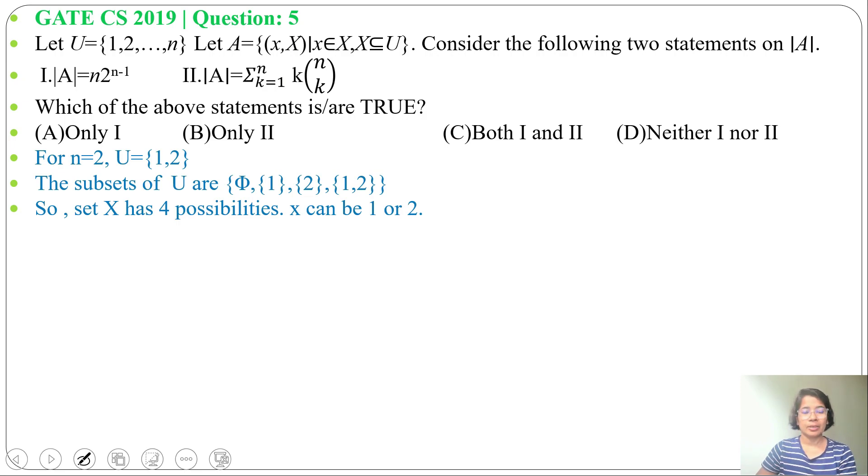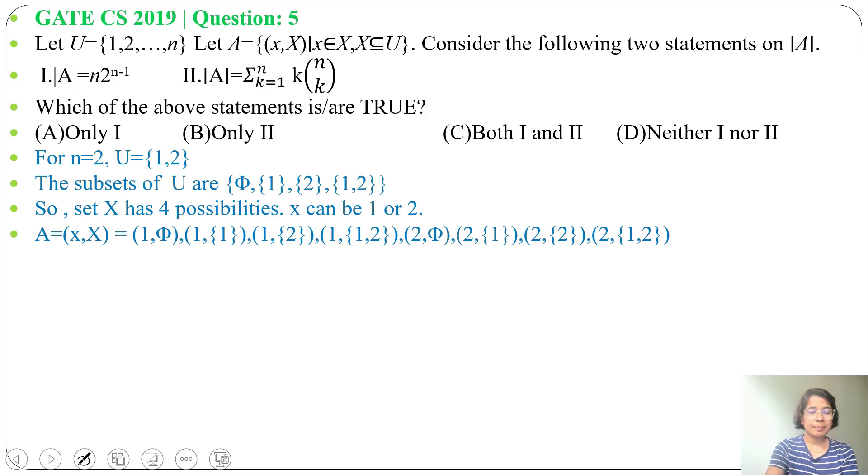Now what can A contain? For A, these are the possibilities. It's an ordered pair of x and X. So this x can be 1, 2 and this X can be phi, or {1}, or {2}, or {1,2}. So it can be (1, phi), then (1, {1}), (1, {2}), (1, {1,2}), then (2, phi), (2, {1}), (2, {2}), (2, {1,2}). There is another condition that x should belong to X.